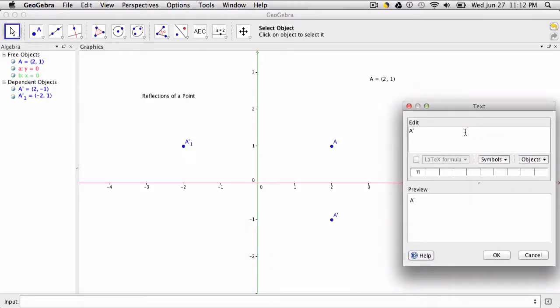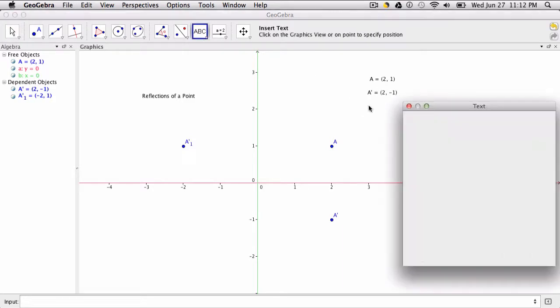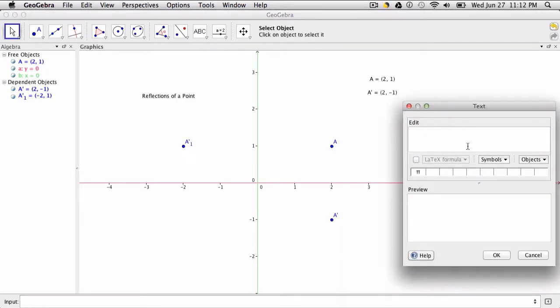So maybe I want to also create the same thing for A prime. So then I type in A prime equals and then click the point A prime and that pops up.